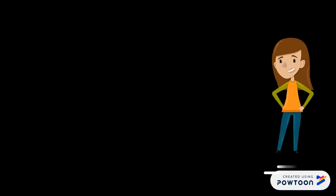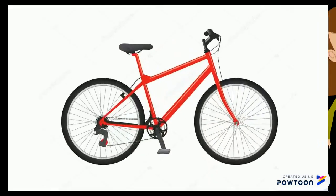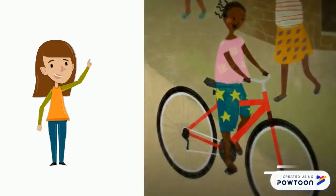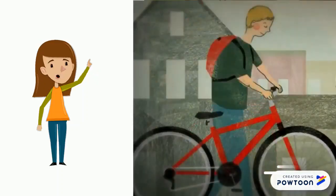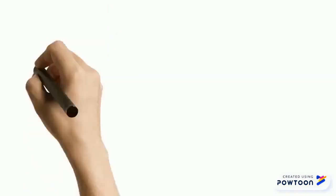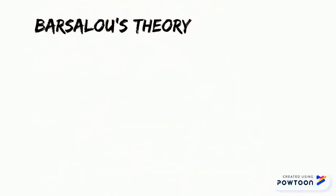Close your eyes and think of yourself on a red bike. You may have thought of different situations where the bike is present. Chances are you haven't thought of a bike isolated in a white background. You may have thought of something like this, like this, like this, or many others.